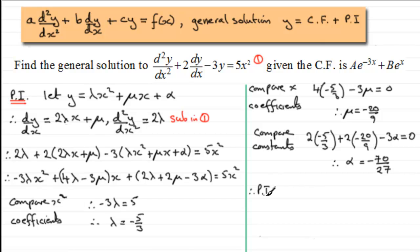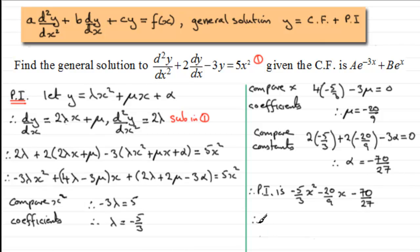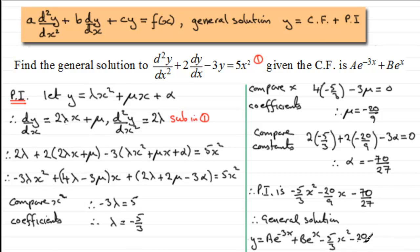Now that we have all our values, the particular integral is: −(5/3)x² − (20/9)x − 70/27. Therefore the general solution is y = Ae^(−3x) + Be^x − (5/3)x² − (20/9)x − 70/27.